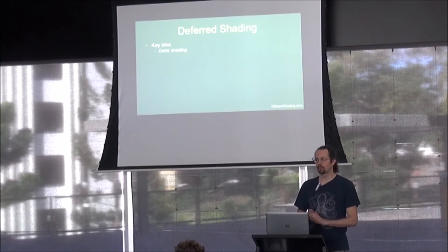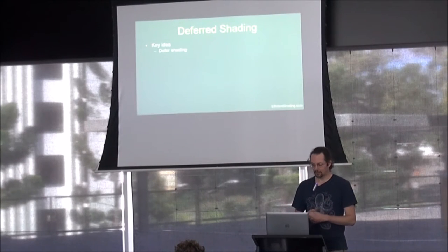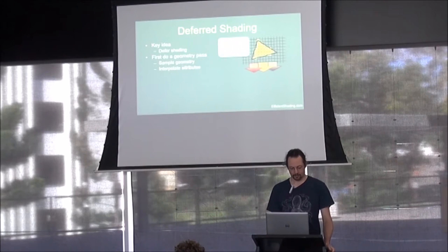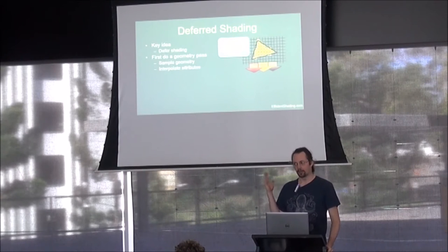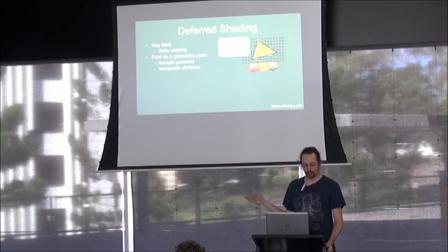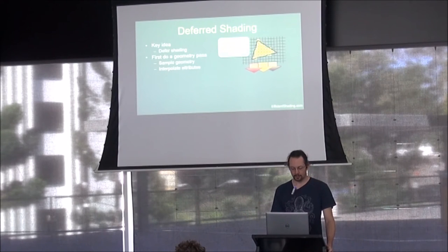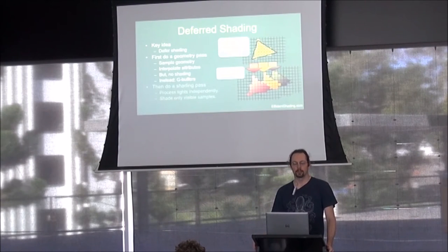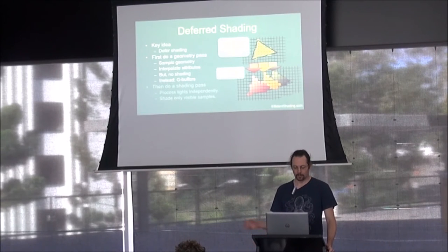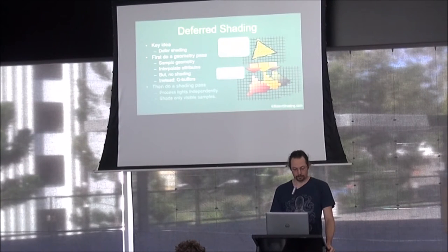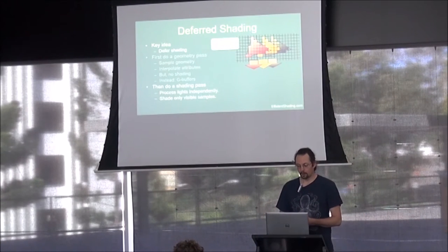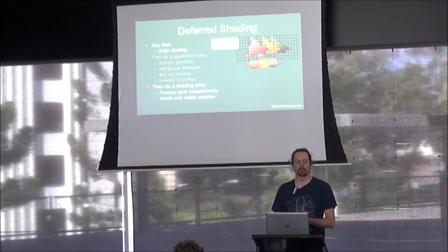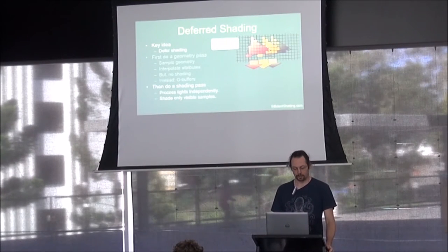The key idea is to defer shading. Instead of feeding fragments to a shader as in forward shading, you store them in G-buffers — basically a buffer per attribute and pixel. After you've done all geometry to the buffers, you do a shading pass completely separate from the geometry pass. They have no relation except the buffers.